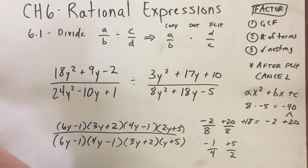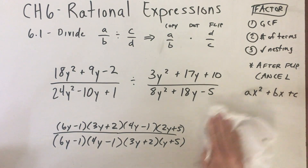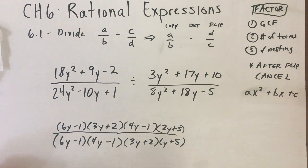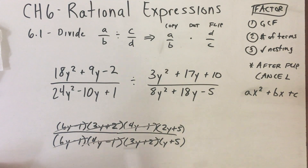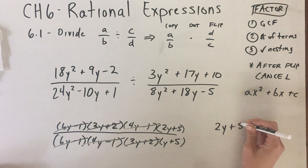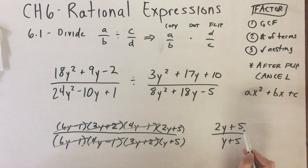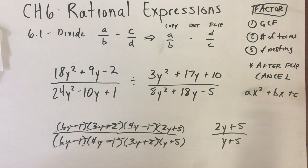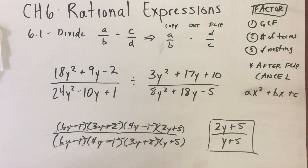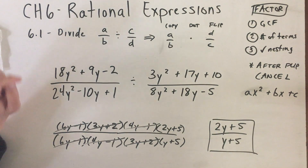Now that I've factored every polynomial, I can cancel anything that appears on both top and bottom. (6y - 1) appears on both top and bottom — cancel. (3y + 2) appears on both — remember, you cancel the whole factor. What's left is just (2y + 5). Many people want to cancel the y or the 5, but you can't — these are related through addition and subtraction. You can only cancel factors, not terms related by addition or subtraction. So (2y + 5) is your final answer.